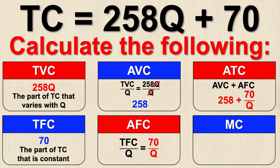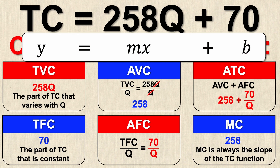The final thing to look at is marginal cost — how much the total cost will increase per one unit increase in Q. This value is 258, and it will always be the slope of the total cost equation. Remember from high school math: y = mx + b — this is a linear equation, and the m value, the coefficient in front of Q, is always the slope and always the marginal cost. If you're into calculus, you can think of this as the derivative of the total cost function with respect to Q — it'll give you the same answer every time.